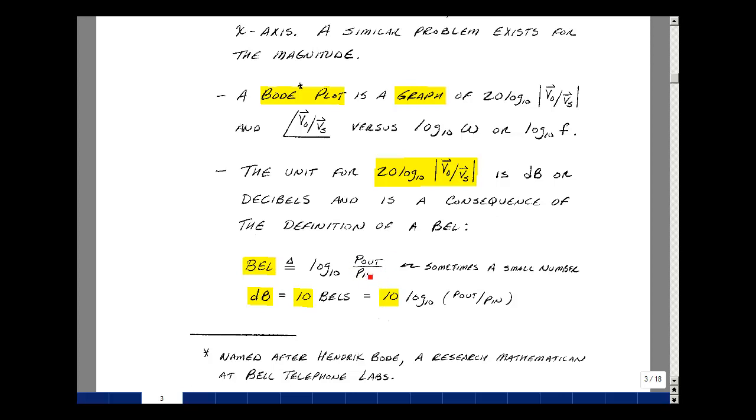Usually this is a pretty small number, so they multiply it by 10, and then this is called a decibel, where deci means 10 in Latin. So you get 10 times the log base 10 of power out over power in. But power is related to v squared over R. You can bring that 2 out in front, and that's where the 20 comes from. This is just a definition that everyone else uses. We're just going to follow the same notation.